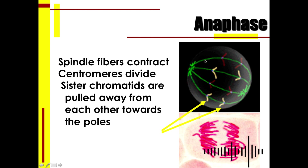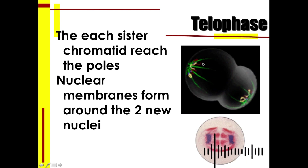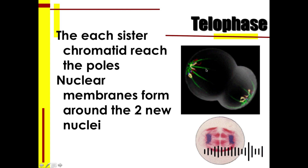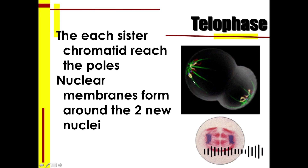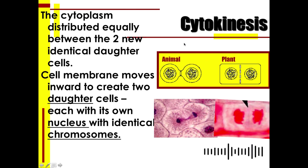During telophase, each sister chromatid reaches the poles. Nuclear membranes form around the two nuclei — one nuclear membrane forms around one set of sister chromatids and another forms around the other set, resulting in the formation of two nuclei.